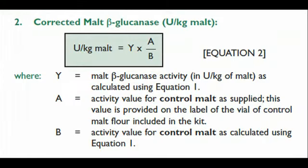To be absolutely sure of the malt-beta-glucanase activity for an unknown sample, the absorbance value for that unknown sample can be compared to what's obtained for the beta-glucanase control malt that's supplied with the kit, and that's done using the equation shown here, where units per kilogram of malt equals y multiplied by A divided by B, where y is the malt-beta-glucanase activity in units per kilogram of malt as calculated using the equation on the previous slide, and A and B are the activity value of the control malt, and B is the activity value of the control malt as calculated using equation 1.